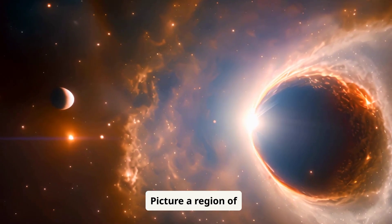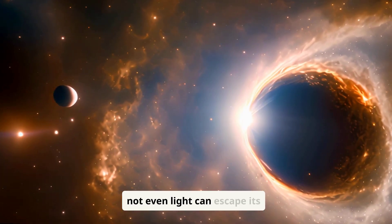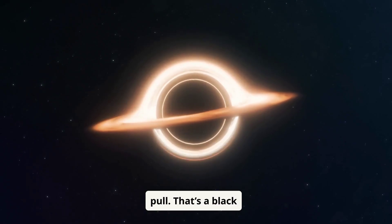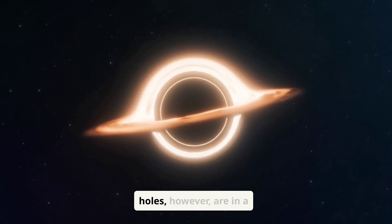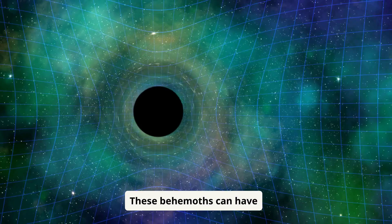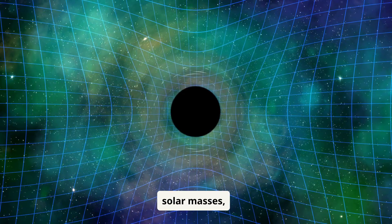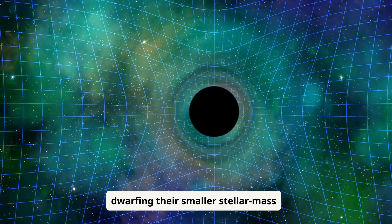Picture a region of space so dense, with gravity so strong, that not even light can escape its pull. That's a black hole. Supermassive black holes, however, are in a class of their own. These behemoths can have masses ranging from millions to even tens of billions of solar masses, dwarfing their smaller stellar-mass counterparts.